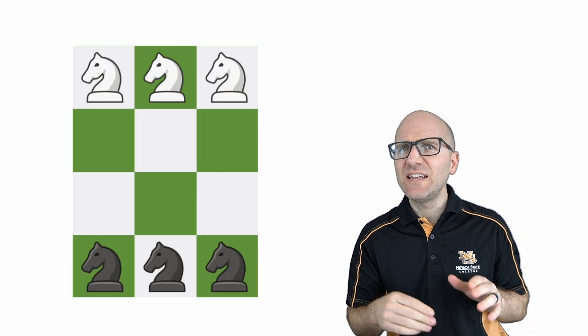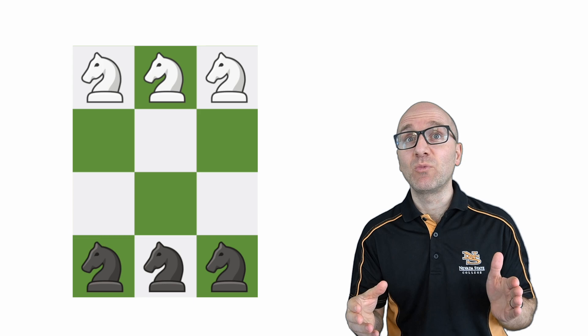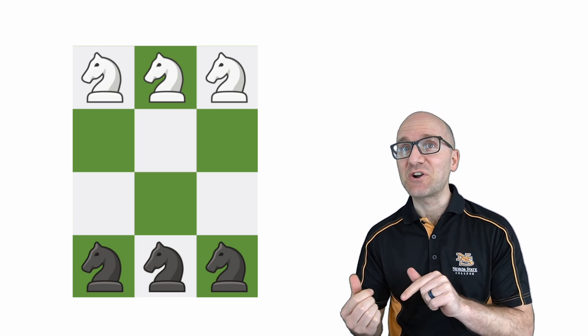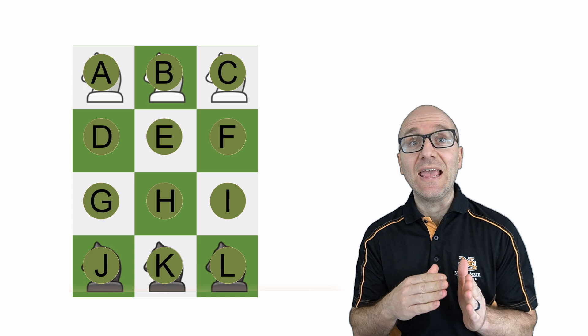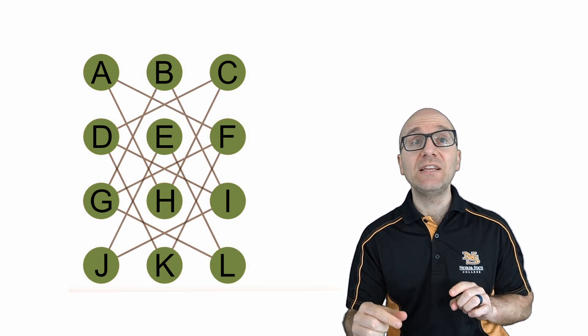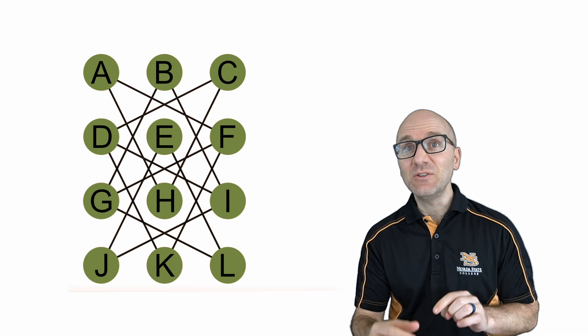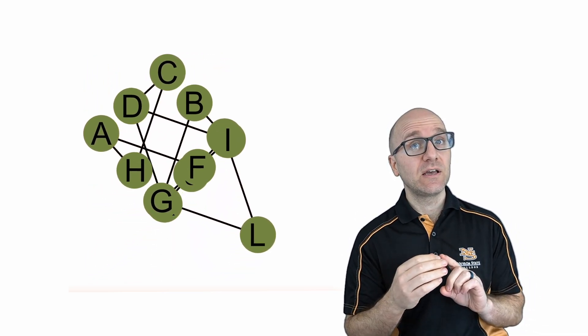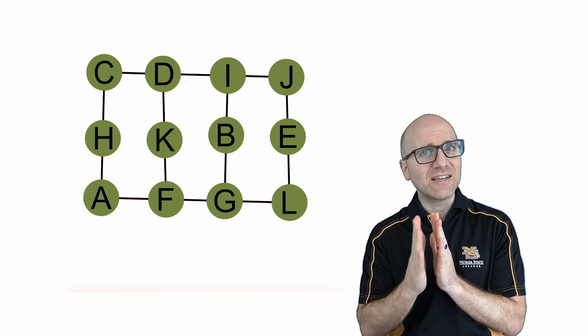Could we use a similar technique to determine whether our problem with the six knights on the four by three chessboard is possible? Let's give it a try. Label the squares A through L. Next, add the connections showing the possible knight jumps between the vertices. It looks pretty complicated, but if we take a minute to untangle things, we find that there is quite a nice structure here.